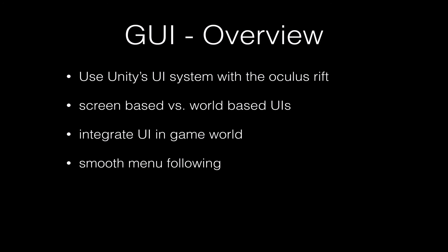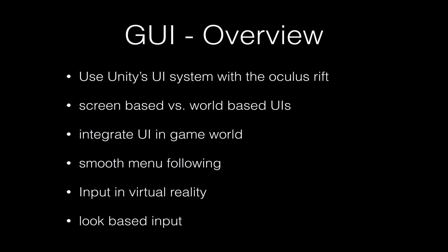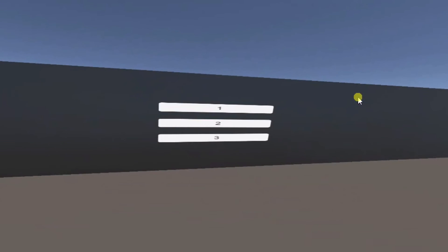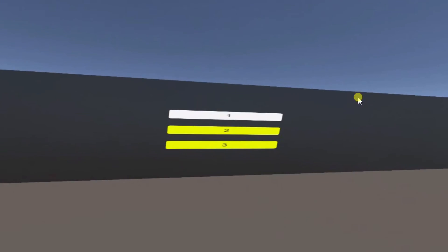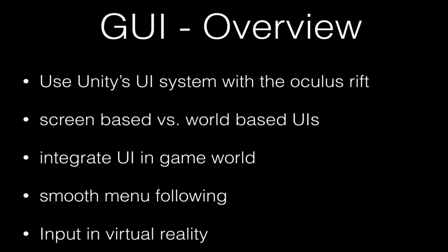In virtual reality we have to adjust the traditional way of input. Usually the player would rather use a gamepad than a mouse in virtual reality. We could use both screen and world-based user interfaces if we have access to the keyboard or gamepad. On the other hand, we might want to select UI elements and trigger actions by simply looking at them. In this case we are restricted to the world-based UI, as we couldn't look at a specific UI item if the whole user interface would follow the player's head movements.